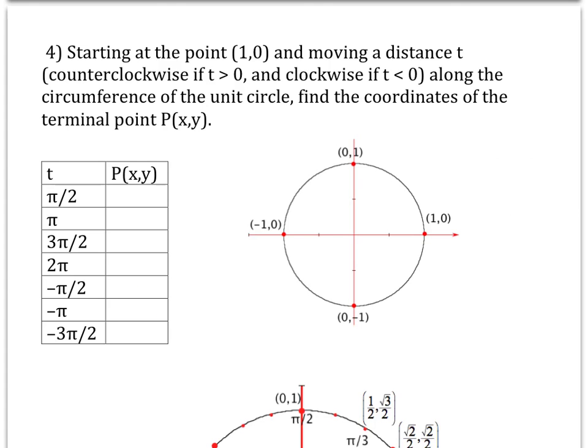The circumference of a circle is 2πr, so the circumference of the unit circle is 2π. That means if you go all the way around, you've gone 2π units. If you go halfway around, you've gone π units. If you go a quarter of the way around, you've gone π/2 units.